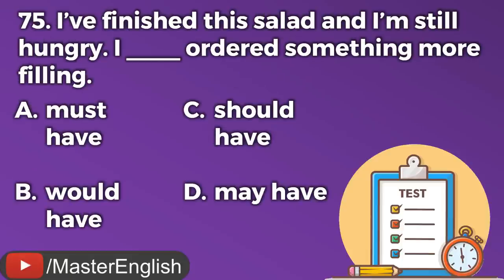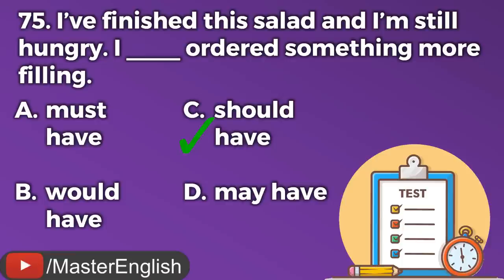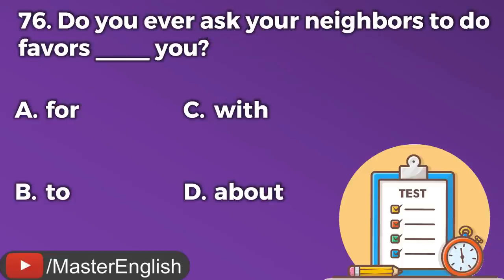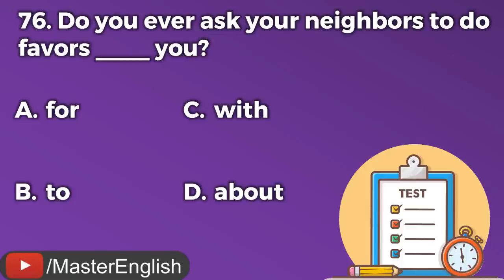Question number seventy-five. I finished the salad and I'm still hungry. I ___ ordered something more filling. A: Must have. B: Would have. C: Should have. D: May have. The correct answer is C: Should have. I should have ordered something more filling. Question number seventy-six. Do you ever ask your neighbors to do favors ___ you? A: For. B: To. C: With. D: About. The correct answer is A: For. Do you ever ask your neighbors to do favors for you?